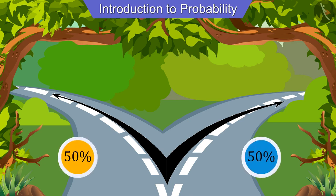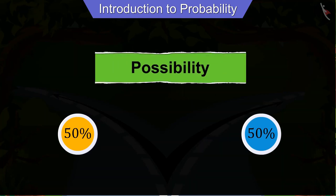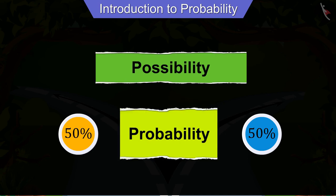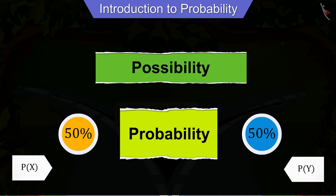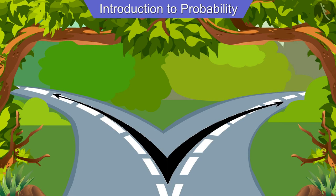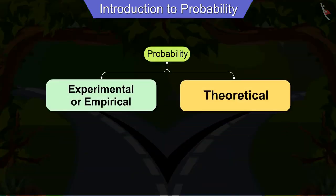Hence the possibility of either road being the right one has been assumed to be 50 percent. We are talking about possibility, and when we talk about possibility we are talking about probability, which we represent by P. We can see that here we have no previous data to choose the right path.